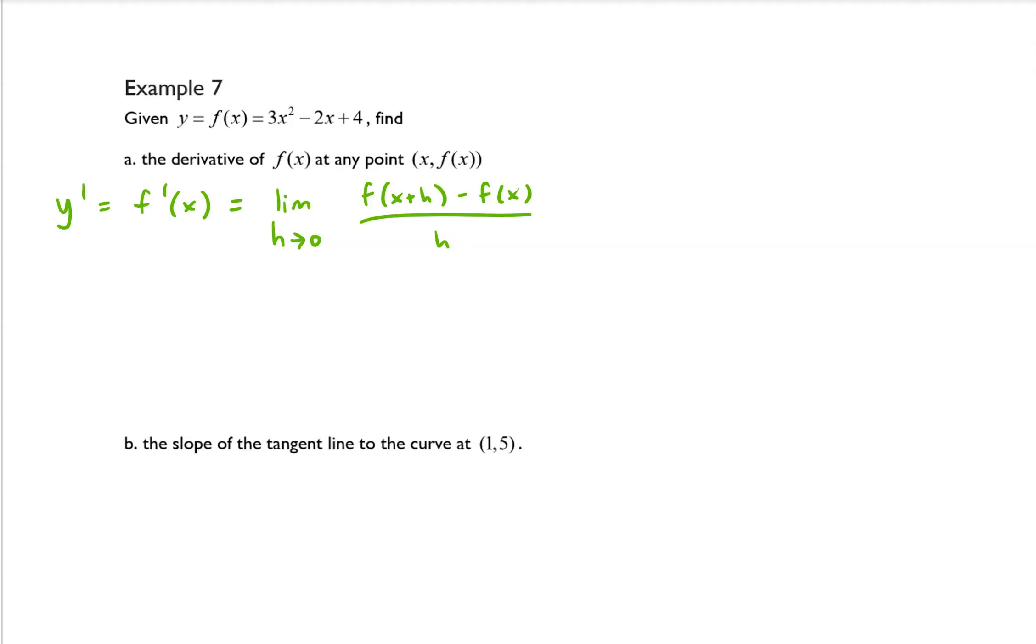So I'm going to come off to the side here and find f(x+h) to be 3 times (x+h) squared minus 2 times (x+h) plus 4, and that is equal to 3 times (x squared plus 2xh plus h squared) minus 2x minus 2h plus 4.